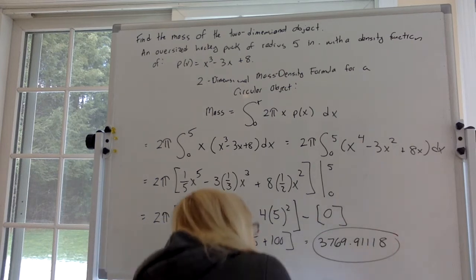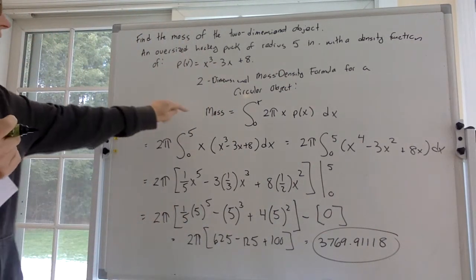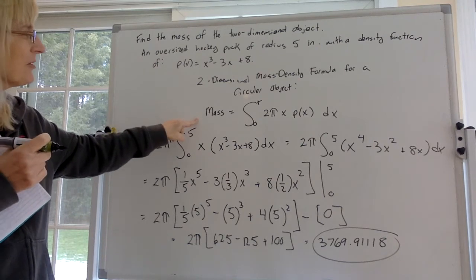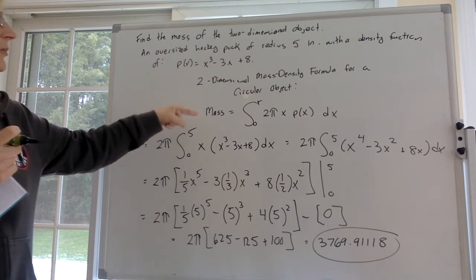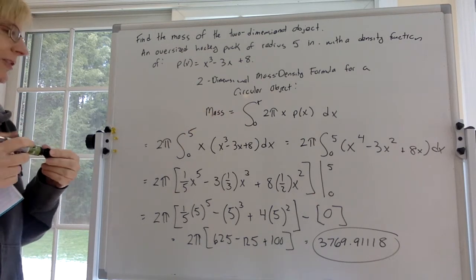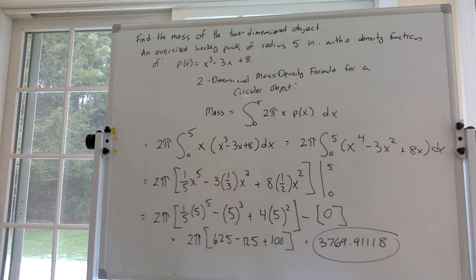Not sure how many decimal points they want, but the key there was to dig up this formula that for a two-dimensional object, given the density, that's how you would calculate the mass. I hope it helps.